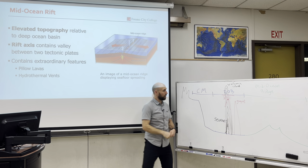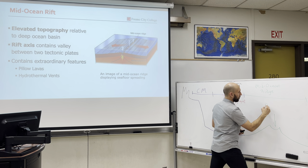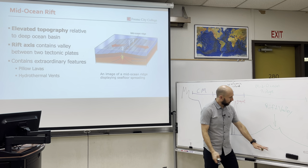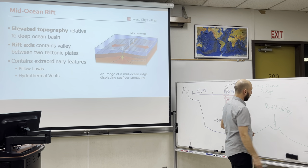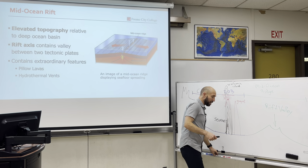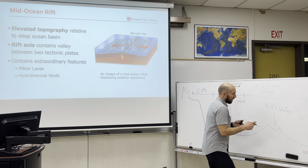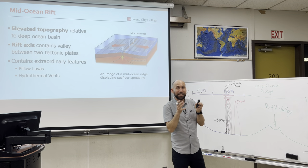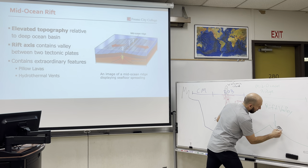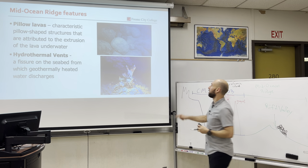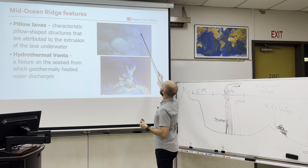Inside the mid-ocean ridge is what's known as a rift valley. Mid-ocean ridges are elevated — they're creating new earth that spreads out on either side — with a valley right in the middle. They have pretty cool features where lava that erupts underneath the surface bubbles out, and that new material is known as pillow lava because they look like little pillows underneath the ocean.